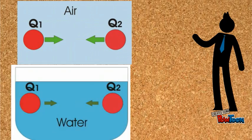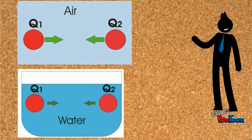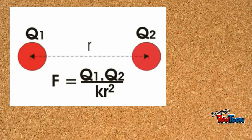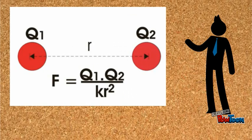For example, if the bodies are kept in air, the force is different from the force while they are kept in water. Variation of force according to the medium is determined by a constant, say this is K.